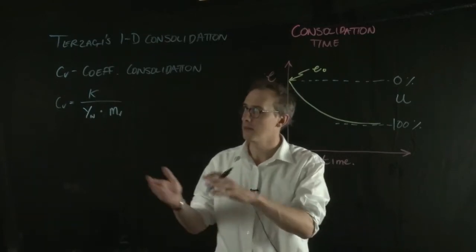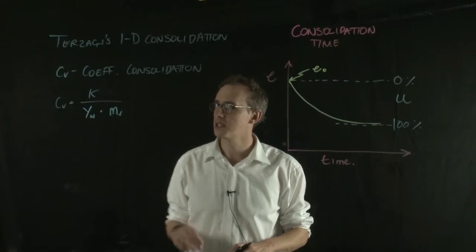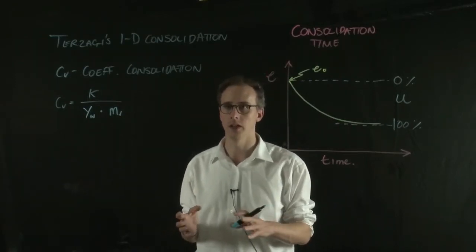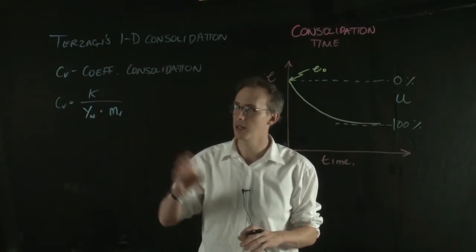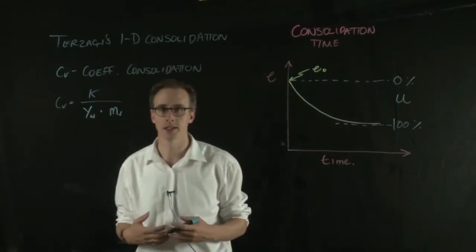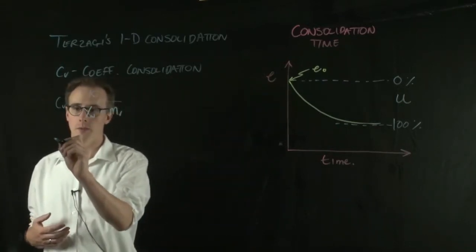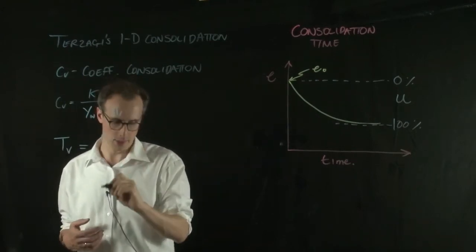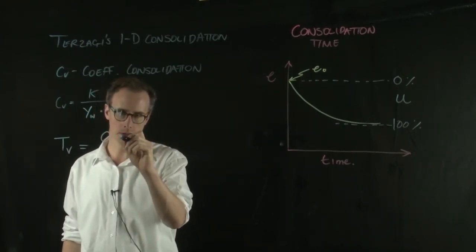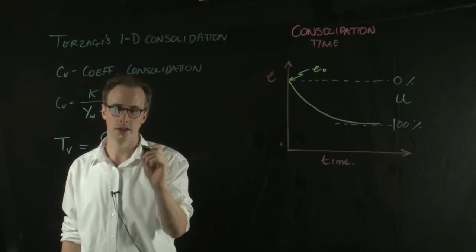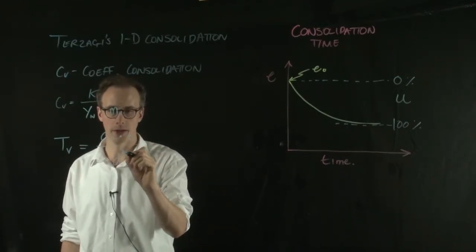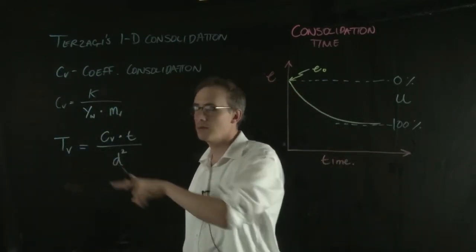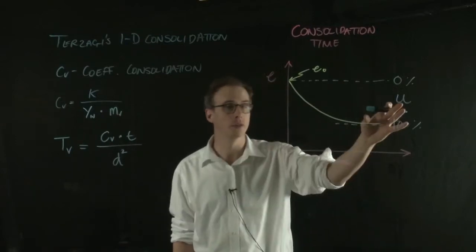But how is that value related to consolidation? Relationships are a solution of partial differential equations. What actually pops out of that is an equation that relates something called a time factor, which is TV, with your CV value, multiplied by the time of consolidation, all over the drainage pathway squared.